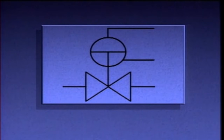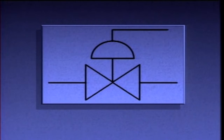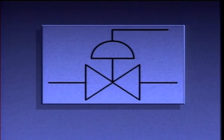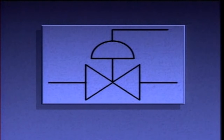On a piping system diagram, a double-acting diaphragm actuator may be represented by its own symbol, or it may also be represented by the same symbol used for a single-acting diaphragm actuator.